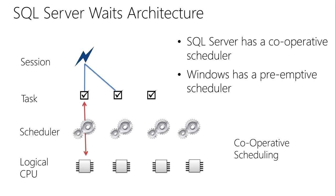The worker thread will be assigned to what we call a scheduler. The scheduler's job is to schedule time for workers to execute on a processor — a logical CPU. SQL Server doesn't care about your underlying process architecture. When SQL Server starts, it looks at the number of CPUs it sees and generates one scheduler per CPU. We call this a cooperative scheduling model.